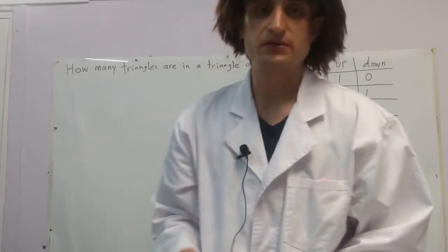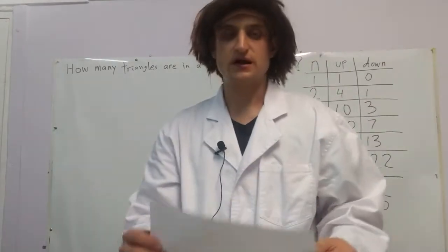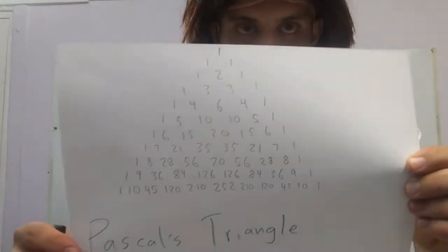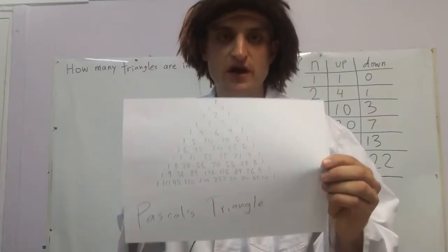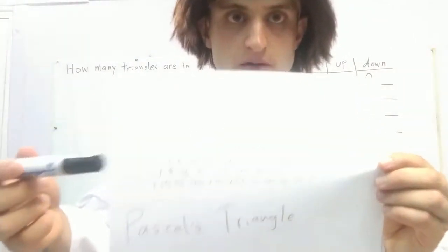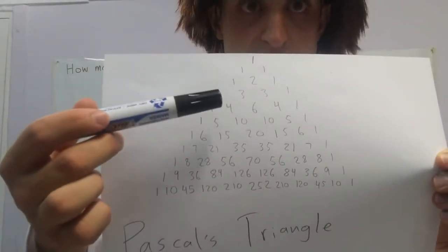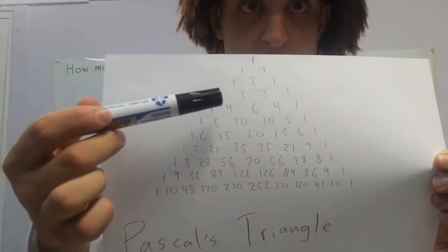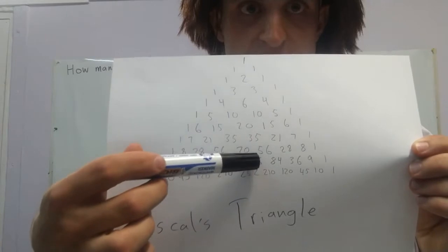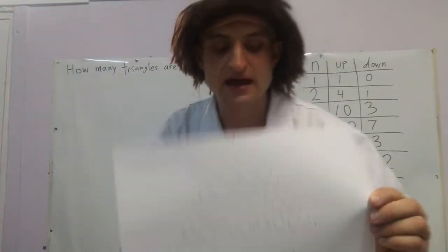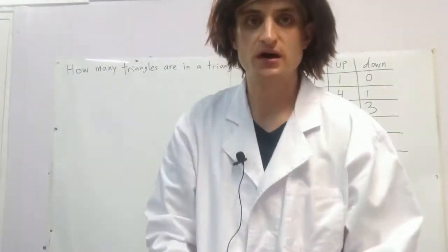All of these numbers can be found on Pascal's triangle. The triangles going up gave us 1, then 4, 10, 20, 35. The next ones would be 56, 84, 120, and so on.